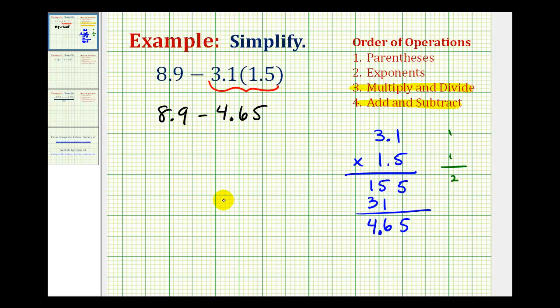So we'll have 8.9 minus 4.65. It might be helpful to put a zero here in the hundredths place value. And then we'll bring the decimal down into our difference. And now we'll subtract as we normally would.